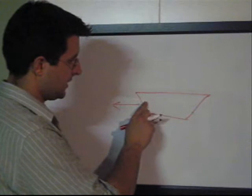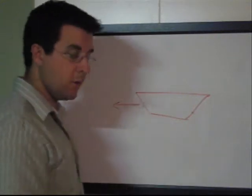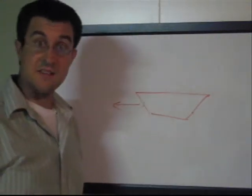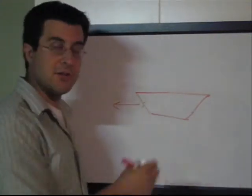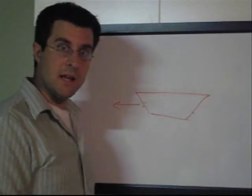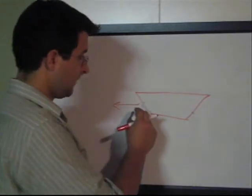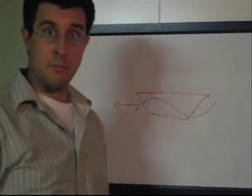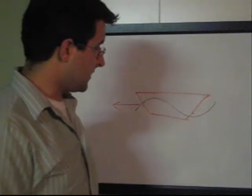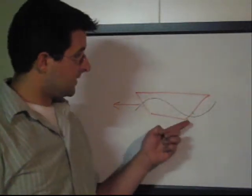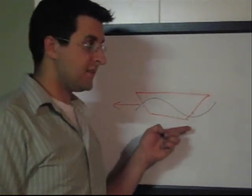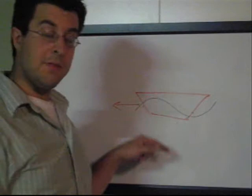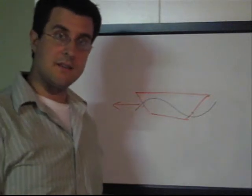Hull speed refers to the condition when the boat is moving fast enough — which in this case is still pretty slow — that the wave it generates is equal in length to the hull itself, and that would look something like this. The reason this is important is because it's probably plain to see: there's sort of a trough that now exists near the rear of the boat, and a lump that exists near the front.